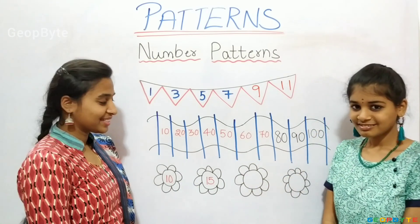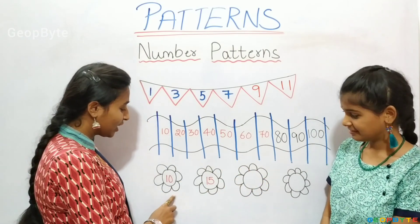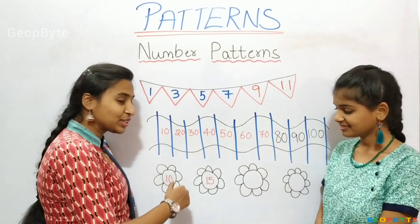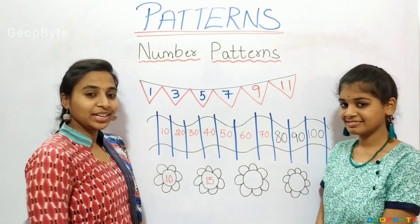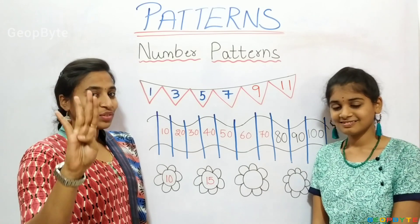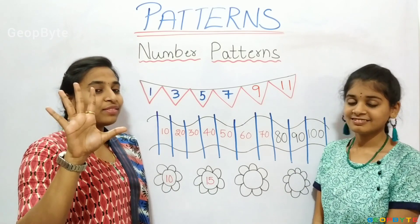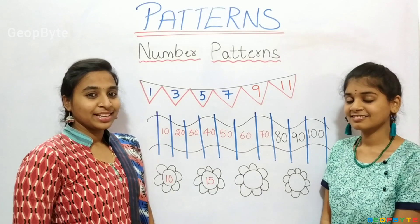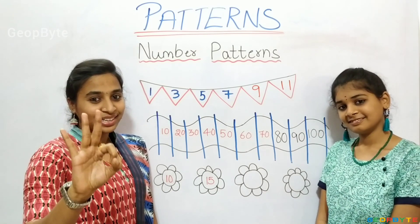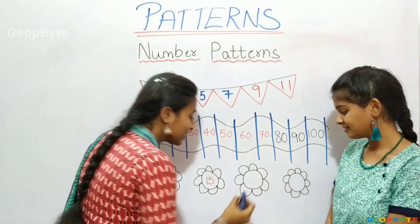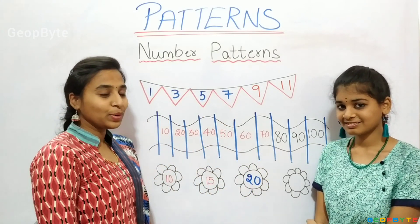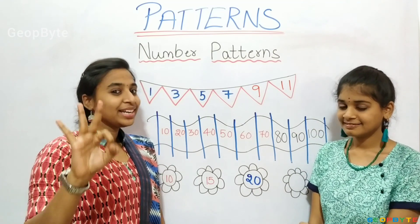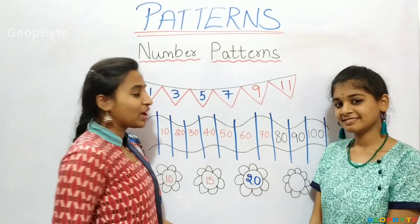Now, see kids. We have four flowers. Only two flowers are written with numbers: ten, fifteen. The difference between these two numbers is five. So after fifteen, which number comes in this flower? Sixteen, seventeen, eighteen, nineteen, twenty — it is twenty. Again, after twenty, which number comes? Twenty-one, twenty-two, twenty-three, twenty-four, twenty-five. We will get twenty-five in this flower.